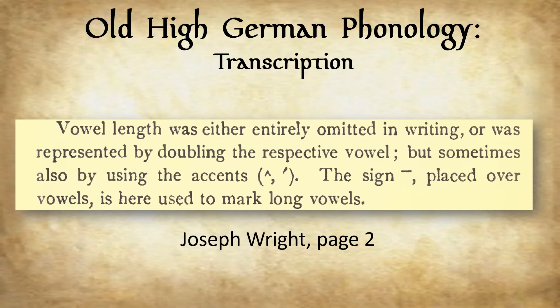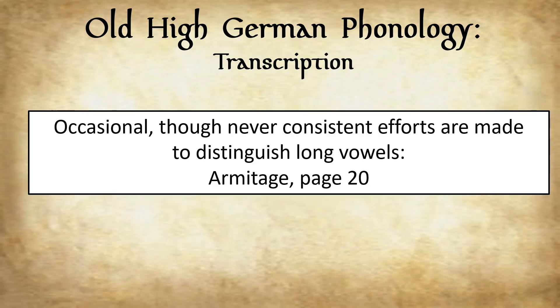The use of diacritics — whether circumflex, acute accent, or macron — would vary from author to author and from linguist to linguist. Sometimes an 'e' with an umlaut in Old High German denotes the original Proto-Germanic 'e.' Apart from that, the circumflex, acute accent, and macron all more or less serve the same function: to distinguish between long and short vowels. Armitage notes that occasional, though never consistent, efforts are made to distinguish long vowels.